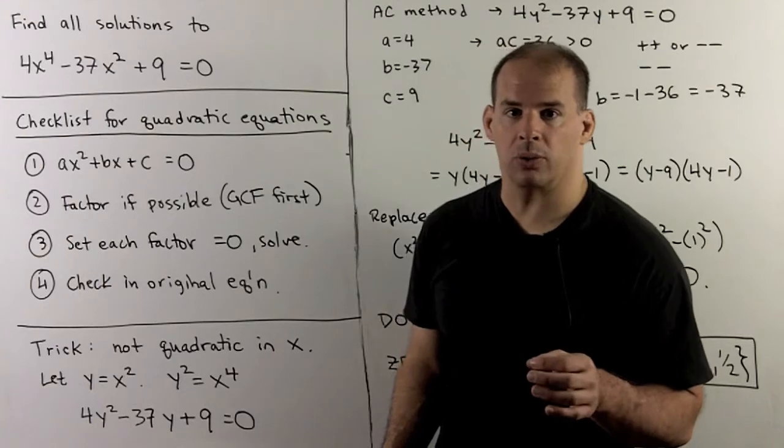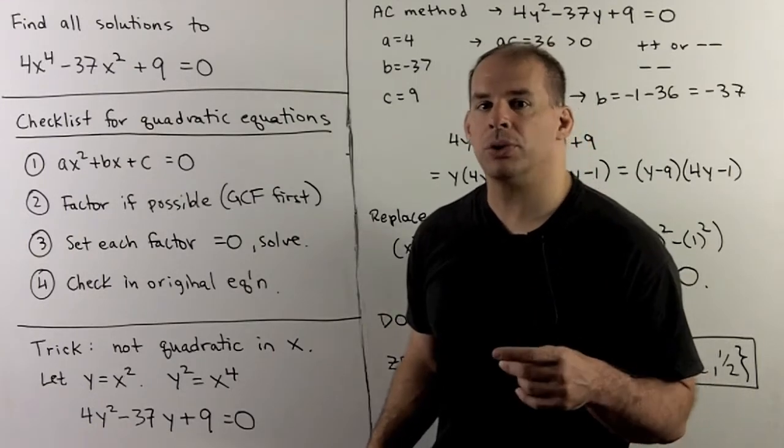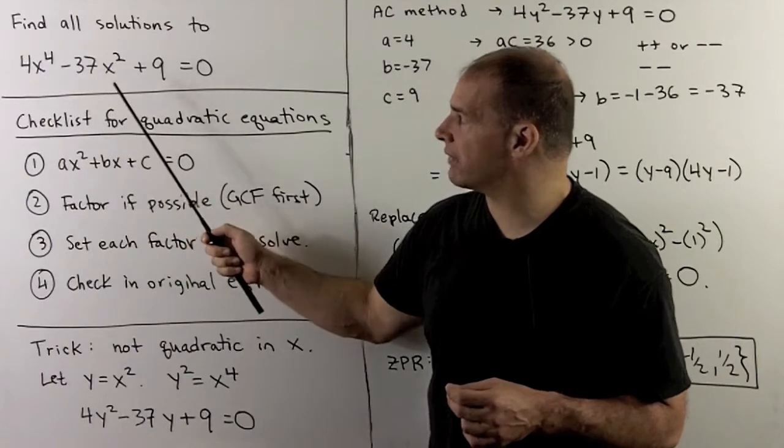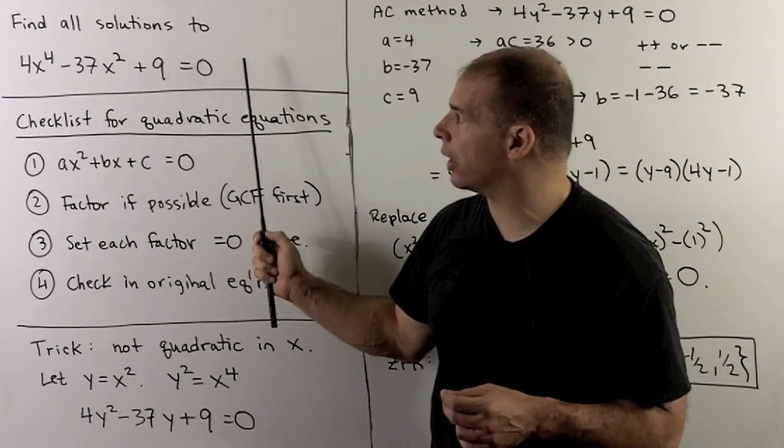Here's another example of the zero product rule. I want to find all solutions to the equation 4x to the fourth power minus 37x squared plus 9 equals 0.